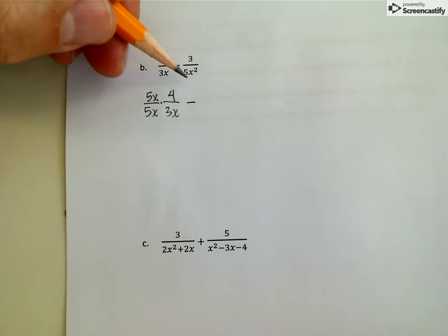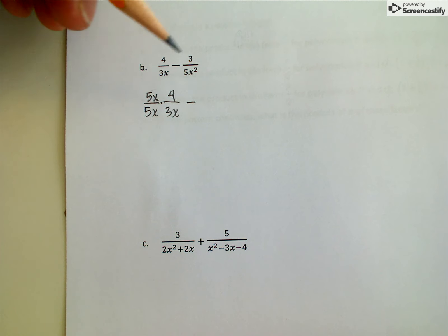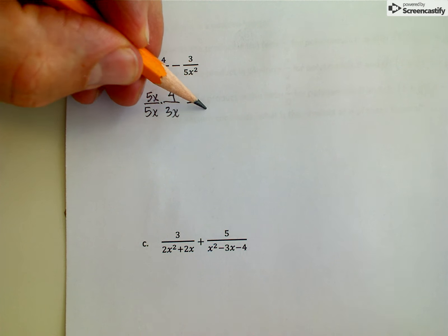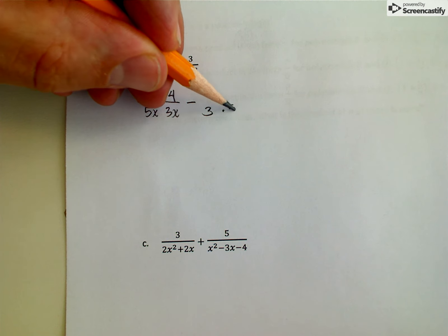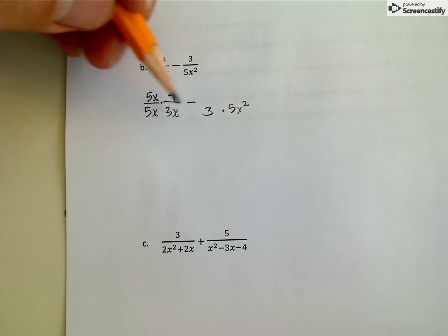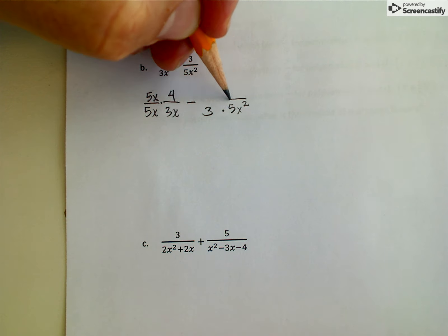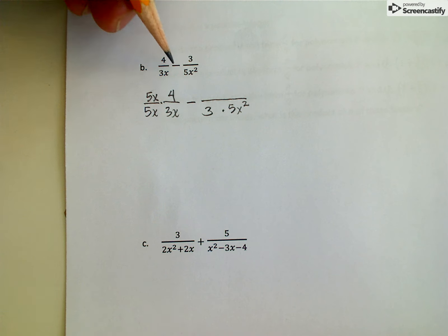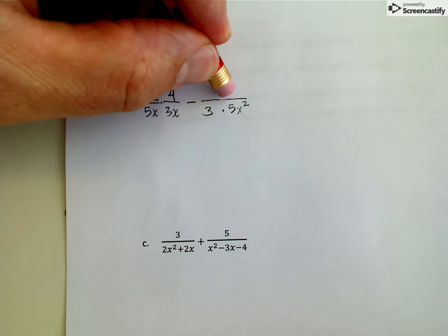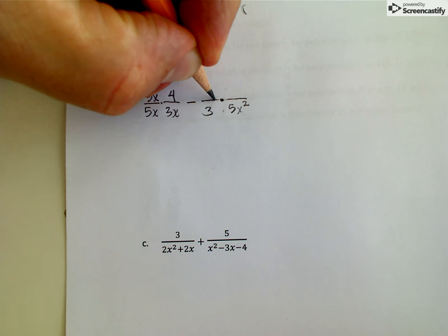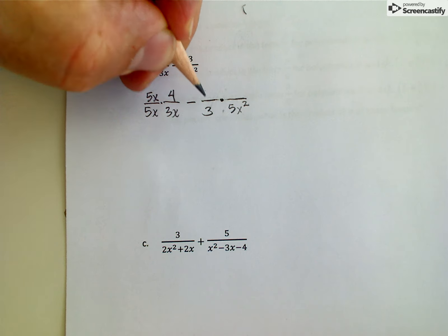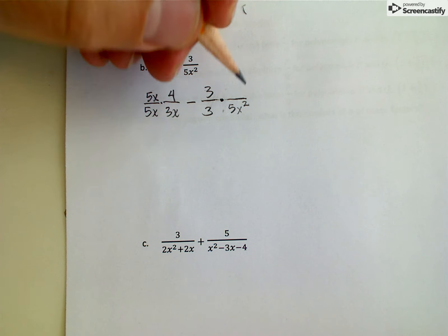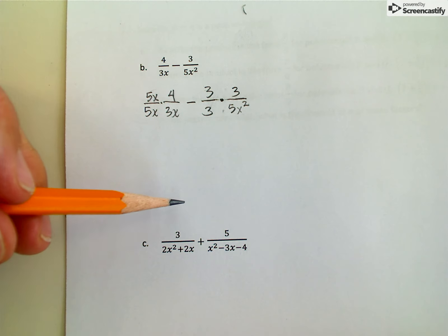And I want to do the same thing for my second rational expression. I already have the x squared in the bottom, but all I need to do is multiply that 5x squared by 3 in order to get my 15x squared on the bottom. And if I multiply, change this into a product here, I multiply the bottom by 3, I also got to multiply the top by 3.